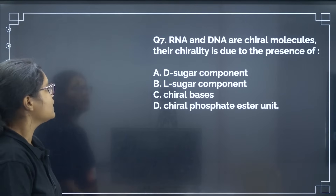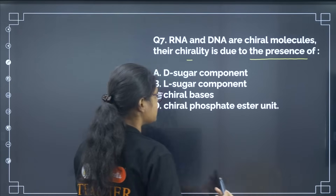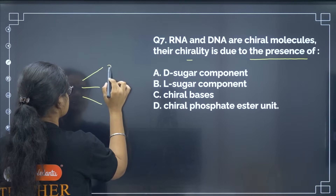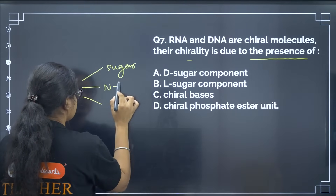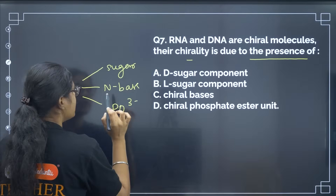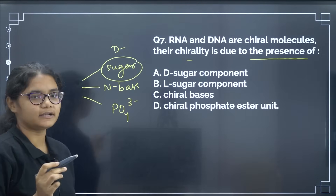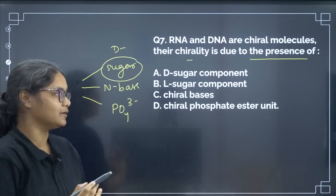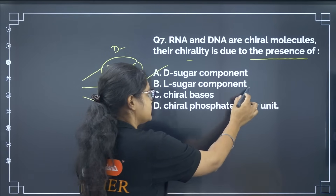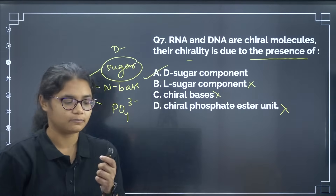RNA and DNA are chiral molecules — their chirality is due to the presence of what? DNA molecules have three components: sugar, nitrogenous bases, and phosphate group. The sugar is a D-sugar, which is chiral, making the molecules chiral. L-sugar is not present, chiral bases are not present, and the phosphate unit is not a chiral compound. So the correct answer is the D-sugar component.